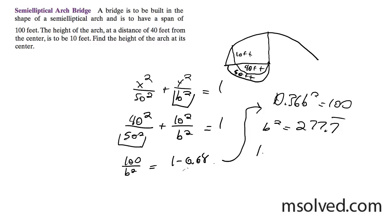And we take the square root of that, we get b, which is the height, which is equal to 16.67 feet. That is it, that's the solution.